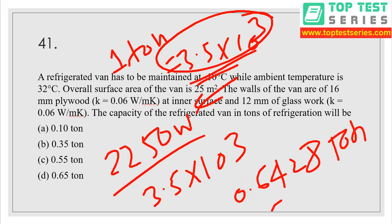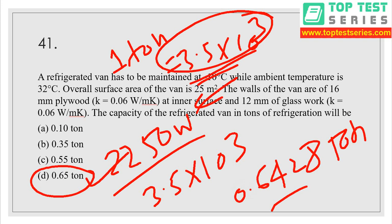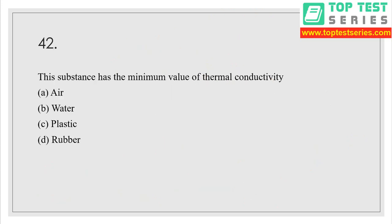So 0.65 tons — option D is the correct answer for this question. Question number 42: this substance has the minimum value of thermal conductivity. We have to find out among all these substances which has the minimum thermal conductivity.